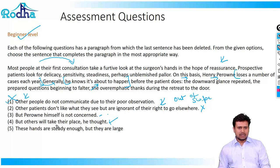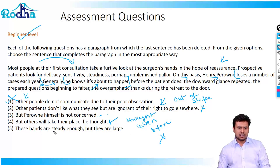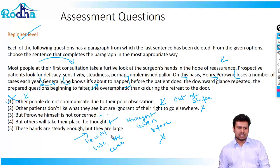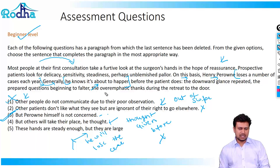Option four says 'but others will take their place, he thought' — 'he thought' assumes there was prior thought given, and there's no such context, so that's gone. Option five, 'these hands are steady enough but they are large,' has no context relating to losing the case. So only option three makes sense: 'but Perron himself is not concerned' can be directly linked back to the passage. A direct relation back to the passage is extremely important. Third is the answer.